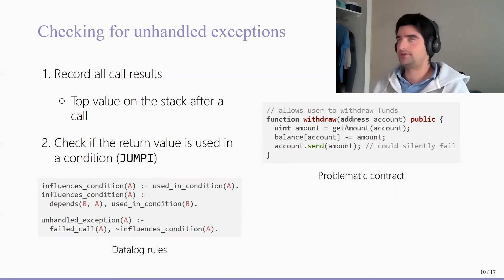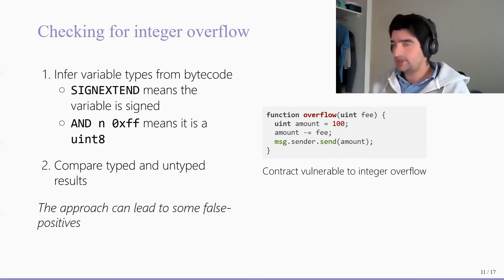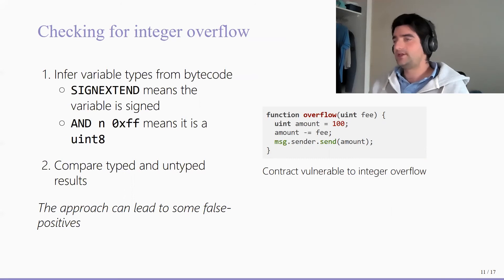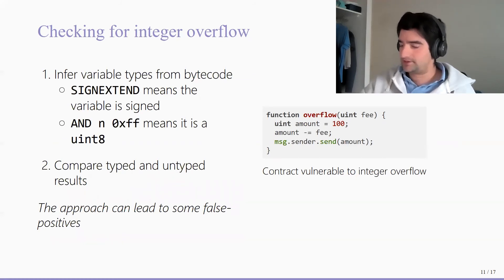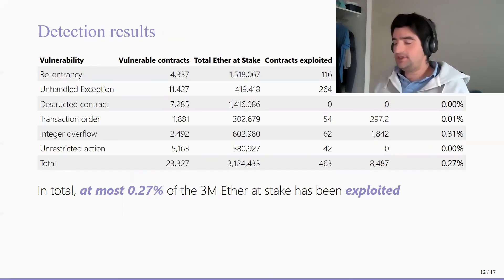For integer overflow, we first tried to infer the actual type of the variable being touched, given that the whole bytecode is completely untyped. We need to use some heuristics — for example, if there is something touching the sign bit we can assume it is a signed integer. Once we infer the type, we compare the typed result with the untyped result and see if they are consistent or not.